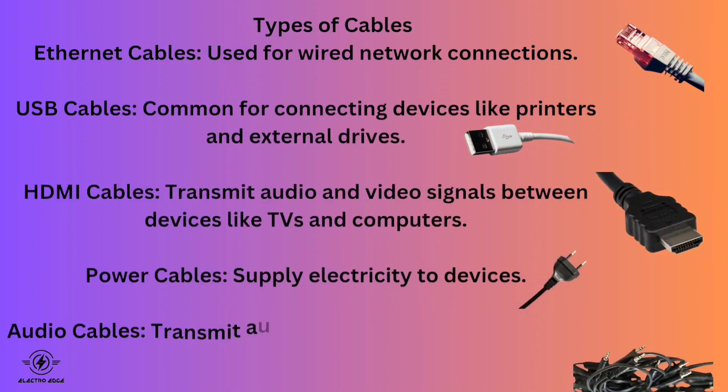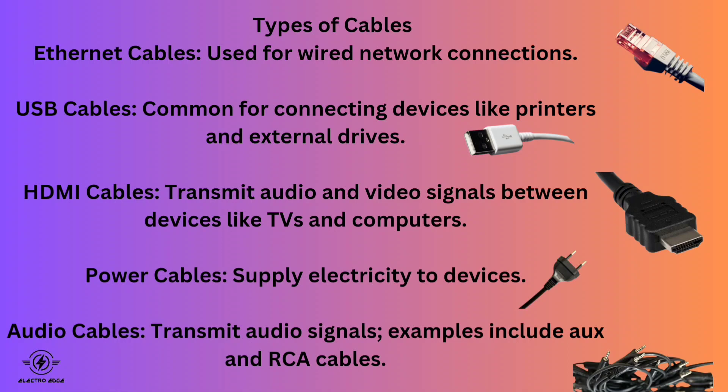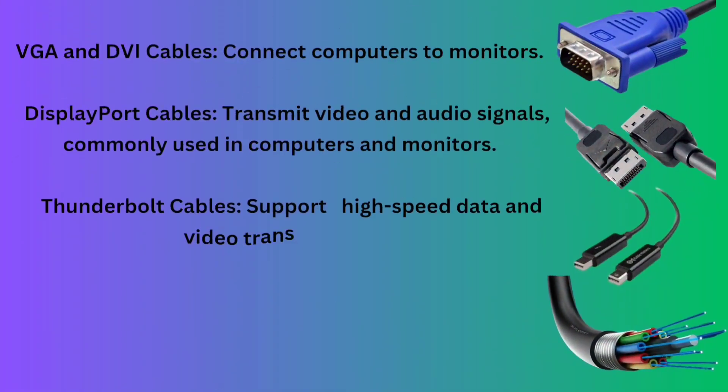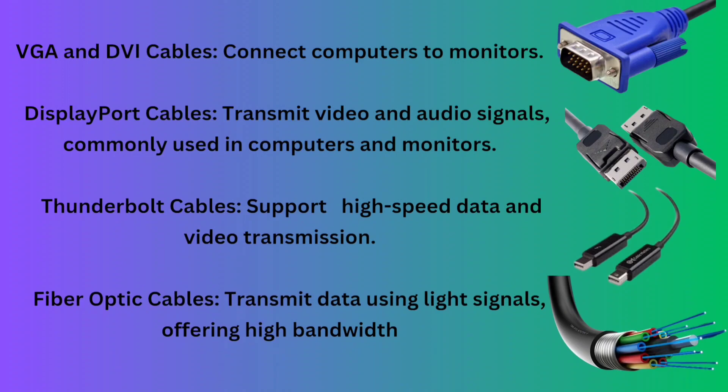Types of cables: Ethernet cables are used for wired network connections. USB cables are common for connecting devices like printers and external drives. HDMI cables transmit audio and video signals between devices like TVs and computers. Power cables supply electricity to devices. Audio cables transmit audio signals, examples include RCA cables. VGA and DVI cables connect computers to monitors.